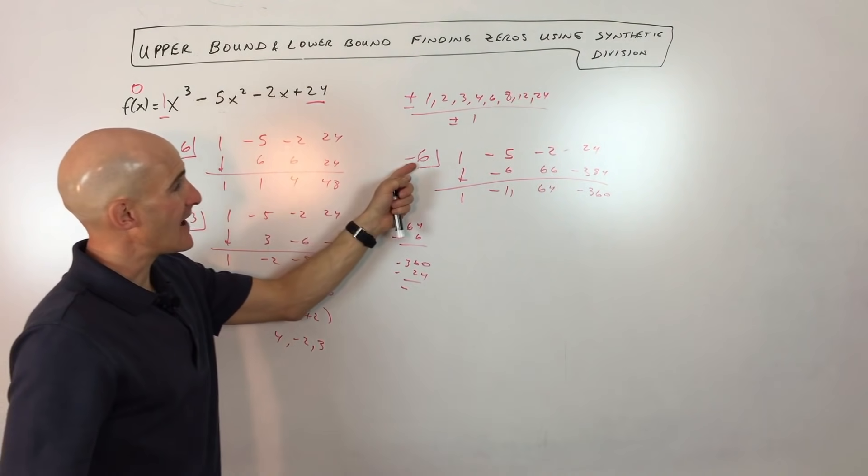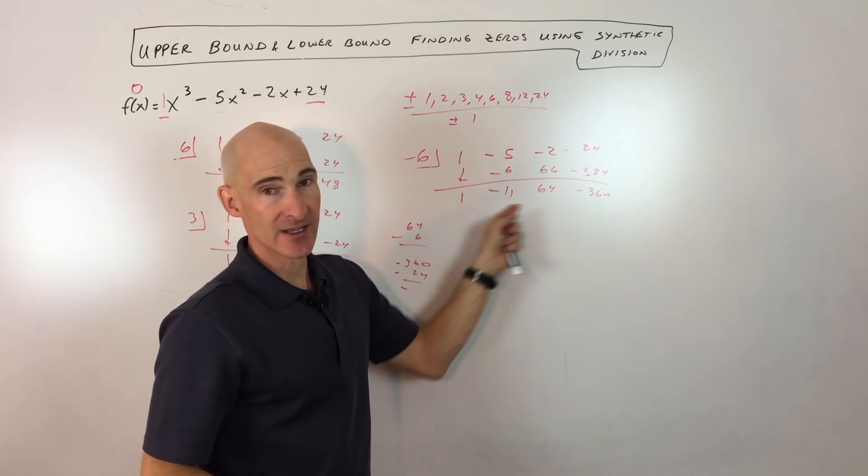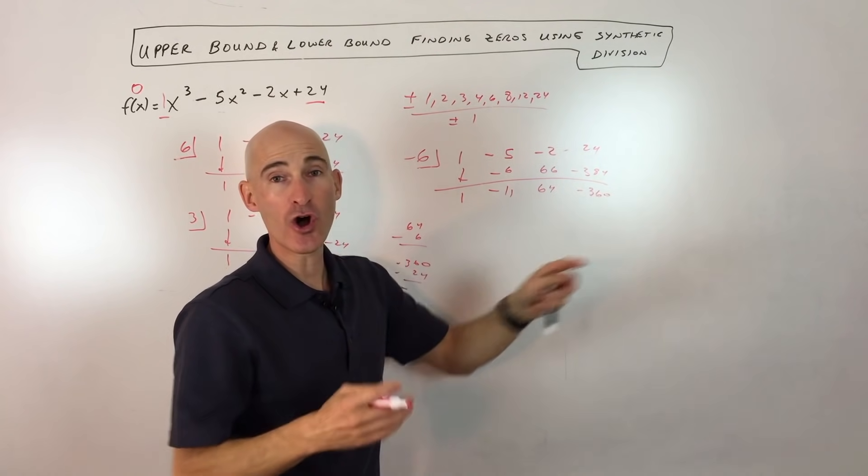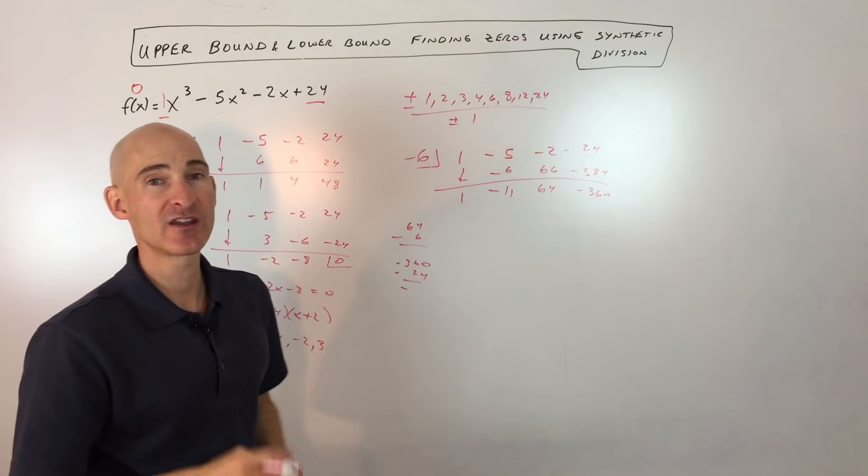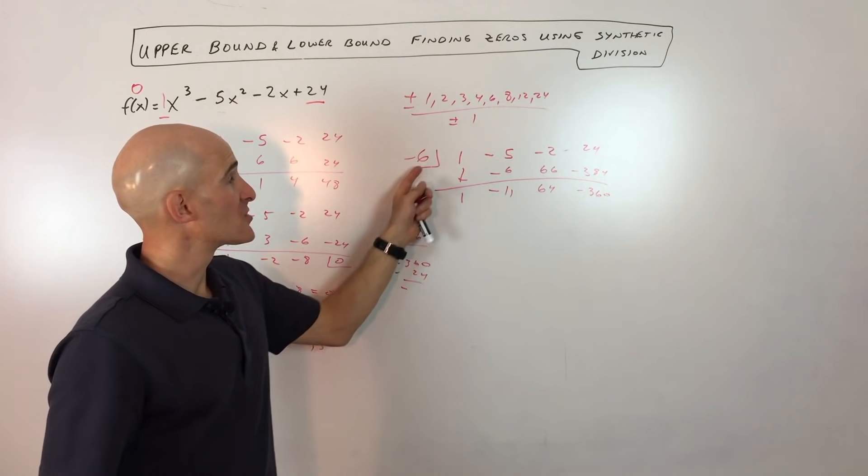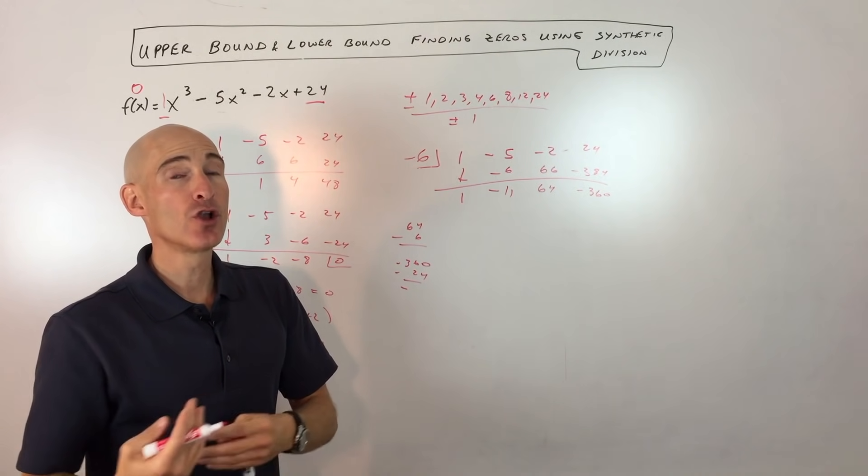And when you're checking for a negative zero, if you get this alternating, it doesn't matter if it starts with positive or negative, but it continues to alternate, positive, negative, or negative, positive, like that, then that tells you it's a lower bound, and you're not going to have any quantities lower than that.